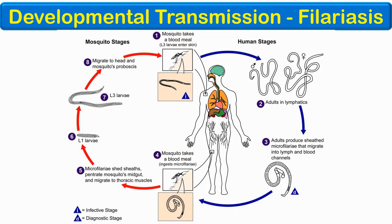Developmental transmission is where pathogens develop from one life stage to the other inside the vector. An example includes the development of microfilaria into infectious larvae inside the midgut of mosquitoes. The infectious larvae migrate to the head of the mosquito and are then injected into another human during the blood meal. There is however no multiplication of the infectious agent occurring inside the vector.